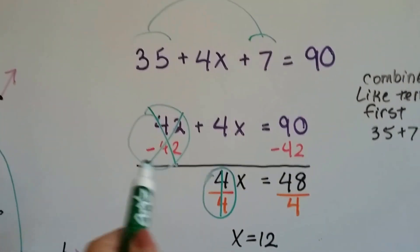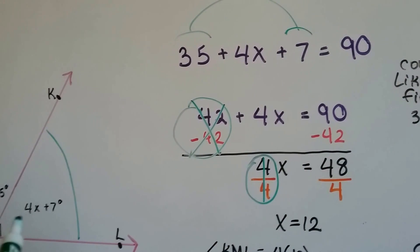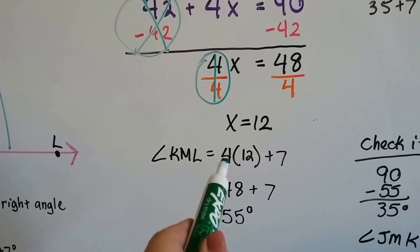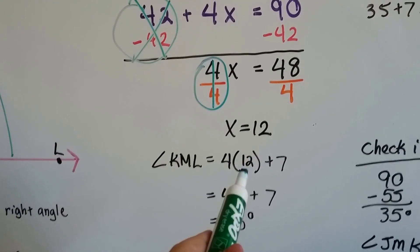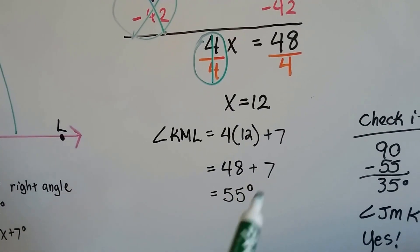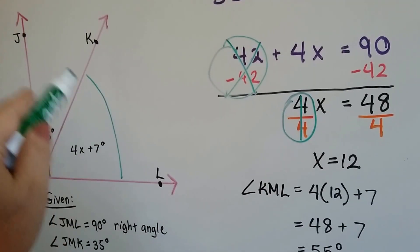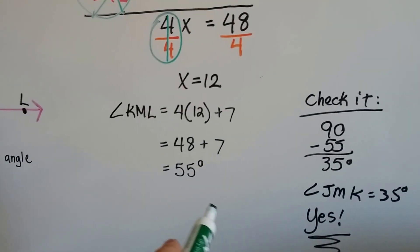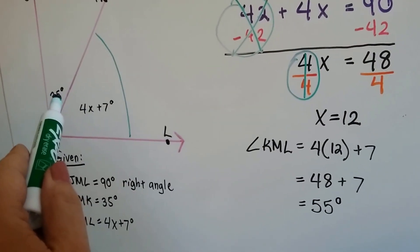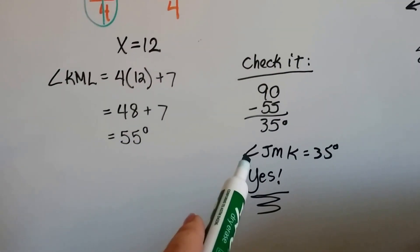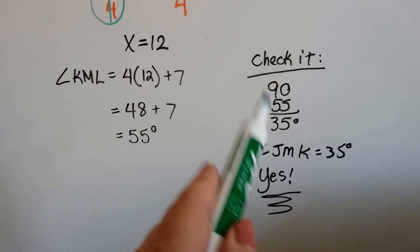If we plug this into our equation, 4X plus 7 plus the 35, we get 4 times 12 is 48. Because we know 4X is equal to 48. And we add the 7. 48 and 7 is 55. So we know that where I drew the green line is 55 degrees. And if we add that 55 to the 35, it should be 90. Or if we have 90 and take away the 55, it should equal 35. And angle JMK is 35 degrees, so we got it right. So these aren't really that hard.